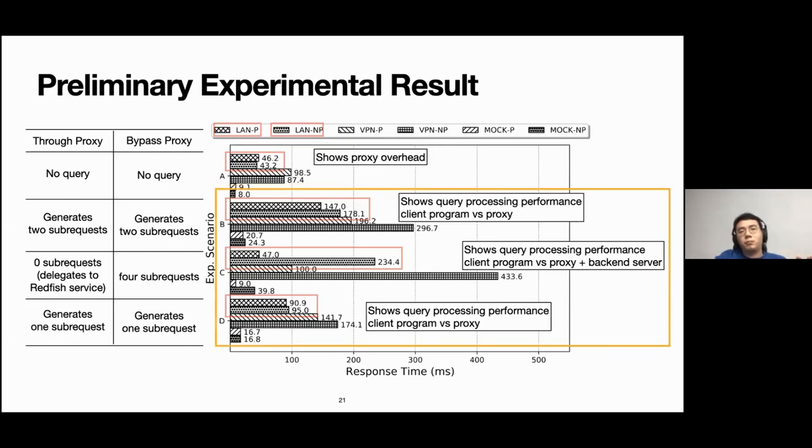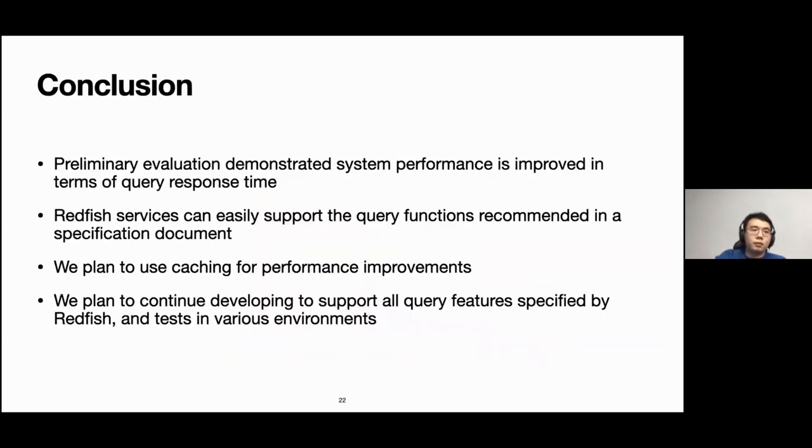Experiment scenario A stands to request without query and it shows the overhead of using proxy compared to request directly. The overhead was about three milliseconds and six percent of response time. However, performance improvements were observed in all other scenarios with using query parameters, especially the scenario C, the proxy delegates processing expand query to the backend Redfish service. The performance is improved by about 80 percent.